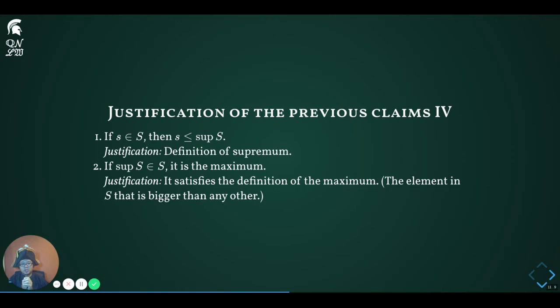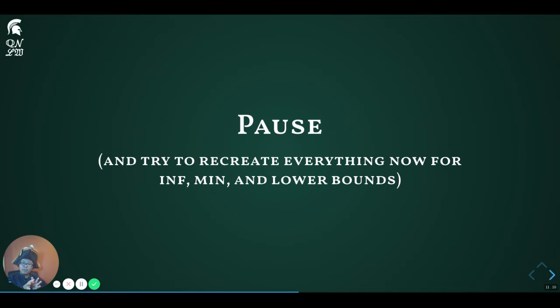In this slide, we prove the reverse assertion: if a supremum happens to belong to a set, then it is the maximum of the set. This is essentially by definition — revisiting the definition of a maximum, it says that an element is the maximum of the set if it is an upper bound for the set that lives within the set. You are encouraged to pause the video, close your eyes, and recall the relationships between sup, max, and general upper bounds, then formulate and prove the analogous relationships between inf, min, and general lower bounds.